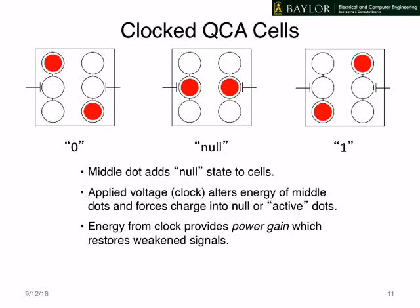Another important feature of QCA is clocking — we can control the cell, whether it is active or inactive. To do that, we add a couple of extra dots to the molecule in the middle. Some leads indicate we can apply a voltage to those dots to attract or repel the electron. With the electrons driven to those dots, we have a null state which bears no information — it's neither 0 nor 1, nor does it interact with neighboring cells. Then we have the active states as before, the 1 and the 0.